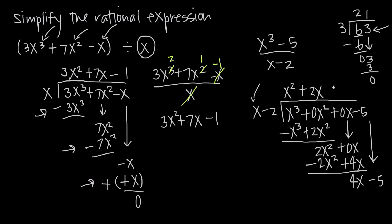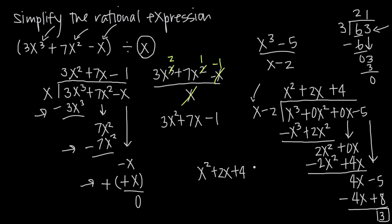What do we multiply by x to get 4x? That's just 4. So 4 times x minus 2 gives us 4x and negative 8. We subtract, changing the signs: 4x becomes negative and negative 8 becomes positive 8. Adding: 4x minus 4x is 0, and negative 5 plus 8 is positive 3. Since there's nothing left to bring down, 3 is our remainder. So the final answer is the quotient x squared plus 2x plus 4, plus the remainder 3 divided by the divisor x minus 2. This whole expression is the result of dividing x cubed minus 5 by x minus 2.